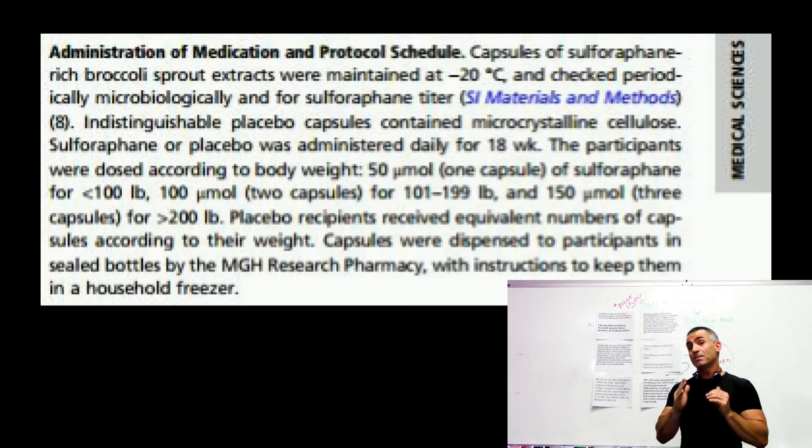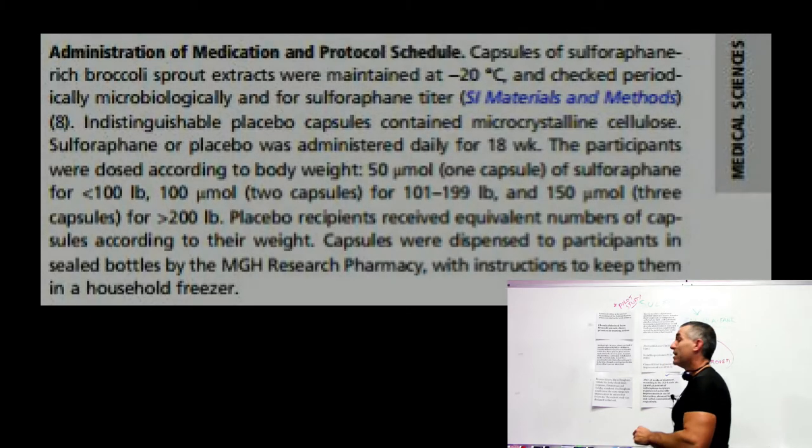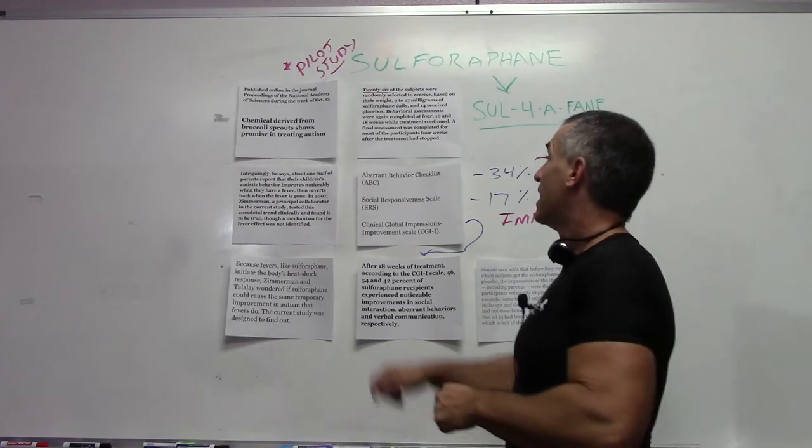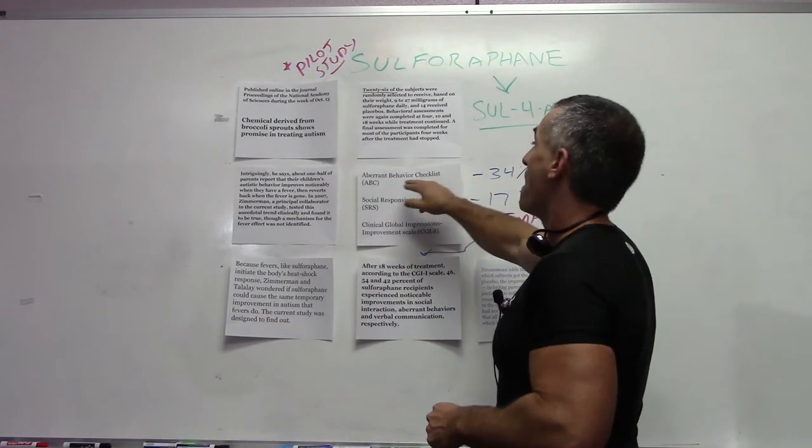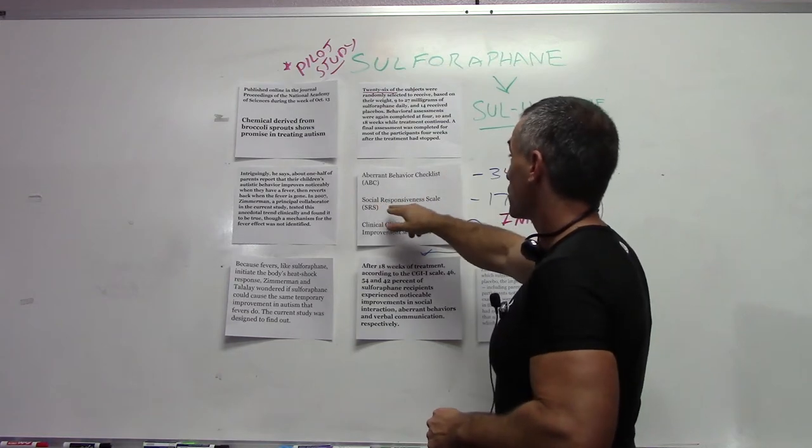And the researchers said they noticed at the beginning of four weeks, they started to see improvements. At the end of 18 weeks, the measurements came out as follows. They looked at three behavioral tests: an aberrant behavior checklist, social responsiveness scale, and clinical global impressions improvement scale.